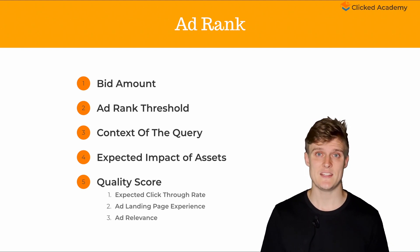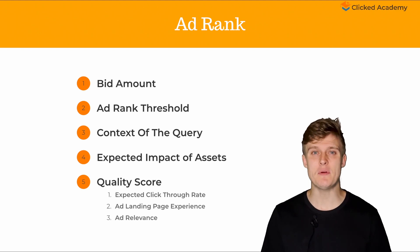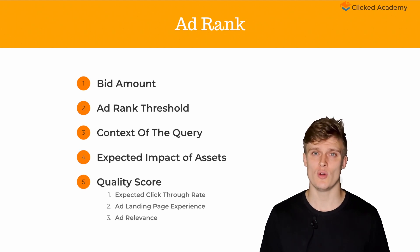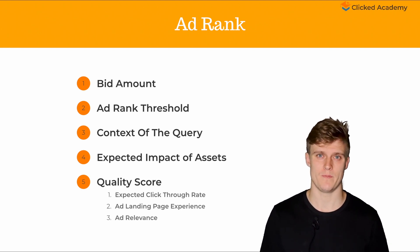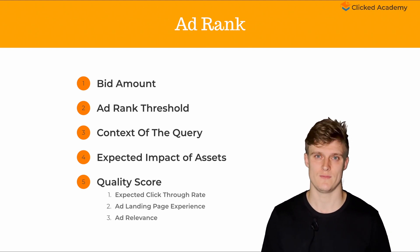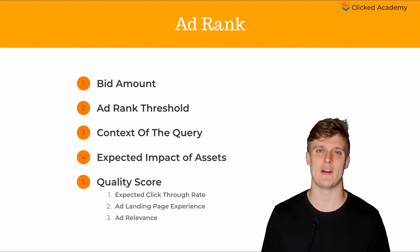The second factor is ad rank threshold. To ensure high quality ads, Google sets a minimum bid you need to enter into an ad auction. If your bid is too low, then you won't enter the auction. So for instance, you can't just bid one cent as you won't be able to enter the auction. The less relevant your ad is to the search, the higher the bid needs to be to hit the ad rank threshold.